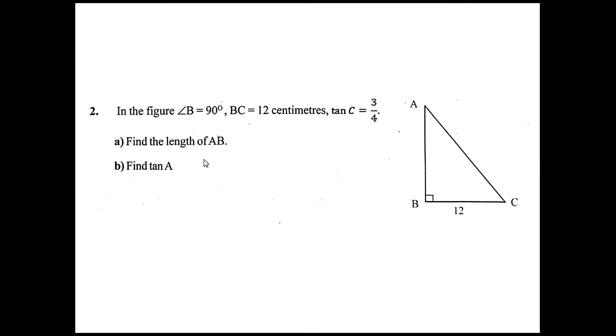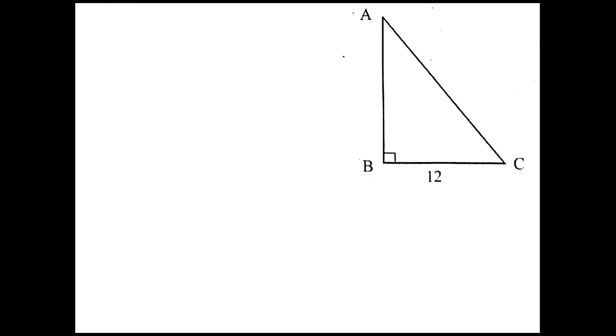The second question is: In the figure, angle B equals 90 degrees, BC equals 12 centimeters, tan C equals 3/4. Find the length of AB and find tan A. Let us look at the figure. It is given that tan C equals 3/4.